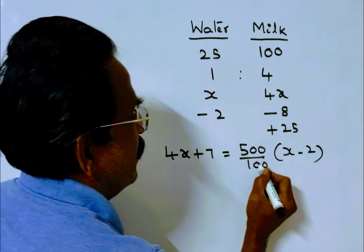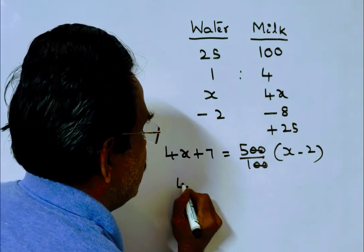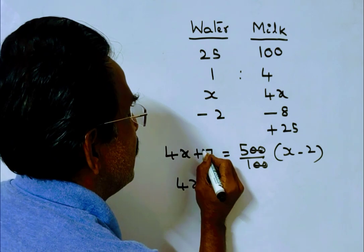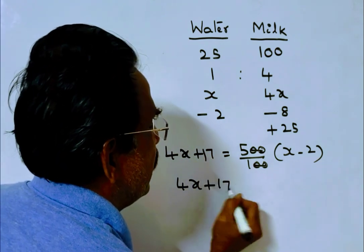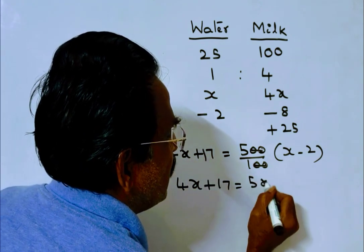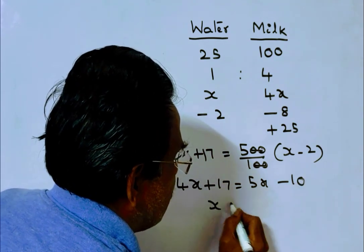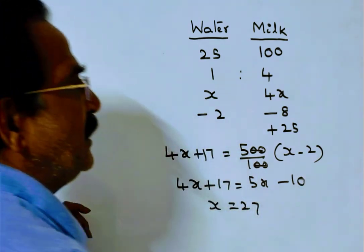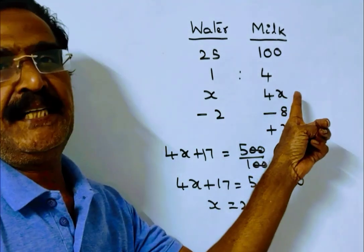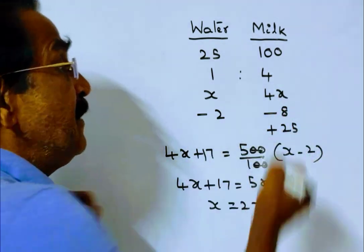This implies x equals 27. We want the quantity of milk initially, so 4x equals 108 liters.